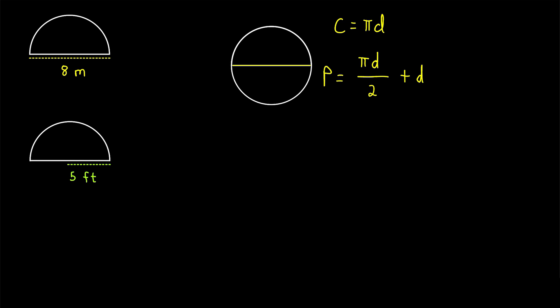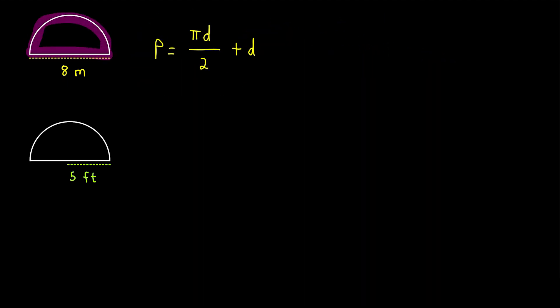So to find the perimeter of a semicircle with diameter d, we just take half of the circumference of a circle with diameter d, that's pi times d over 2, and then add the diameter, so plus d. So with that knowledge, let's go ahead and calculate the perimeter of this semicircle.